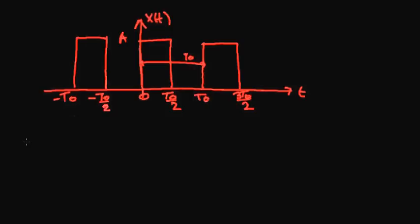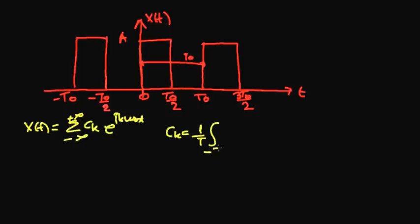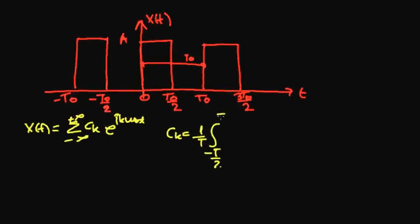And to do that, we have to know these equations, which is x from t is equal to the sum of the complex coefficient Ck multiplied by the exponential of jk omega 0t from minus infinity to plus infinity. Then we find the complex coefficient Ck, which is equal to 1 over period T from minus T over 2 to T over 2, x from t multiplied by the exponential of minus jk omega 0t dt.